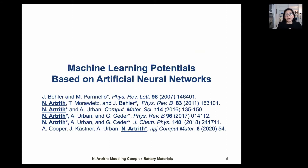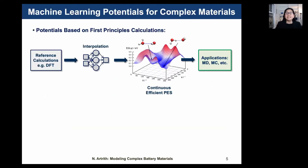During the last 10 years, I have been working on an alternative modeling approach for complex materials. Together with many colleagues, we are developing machine learning potentials based on artificial neural networks. You can look to our original publications for the technical details. We use machine learning for the interpolation of DFT to construct a continuous, efficient, and accurate potential energy surface. The resulting machine learning potential can then be used in molecular dynamics (MD) or Monte Carlo (MC) simulations.